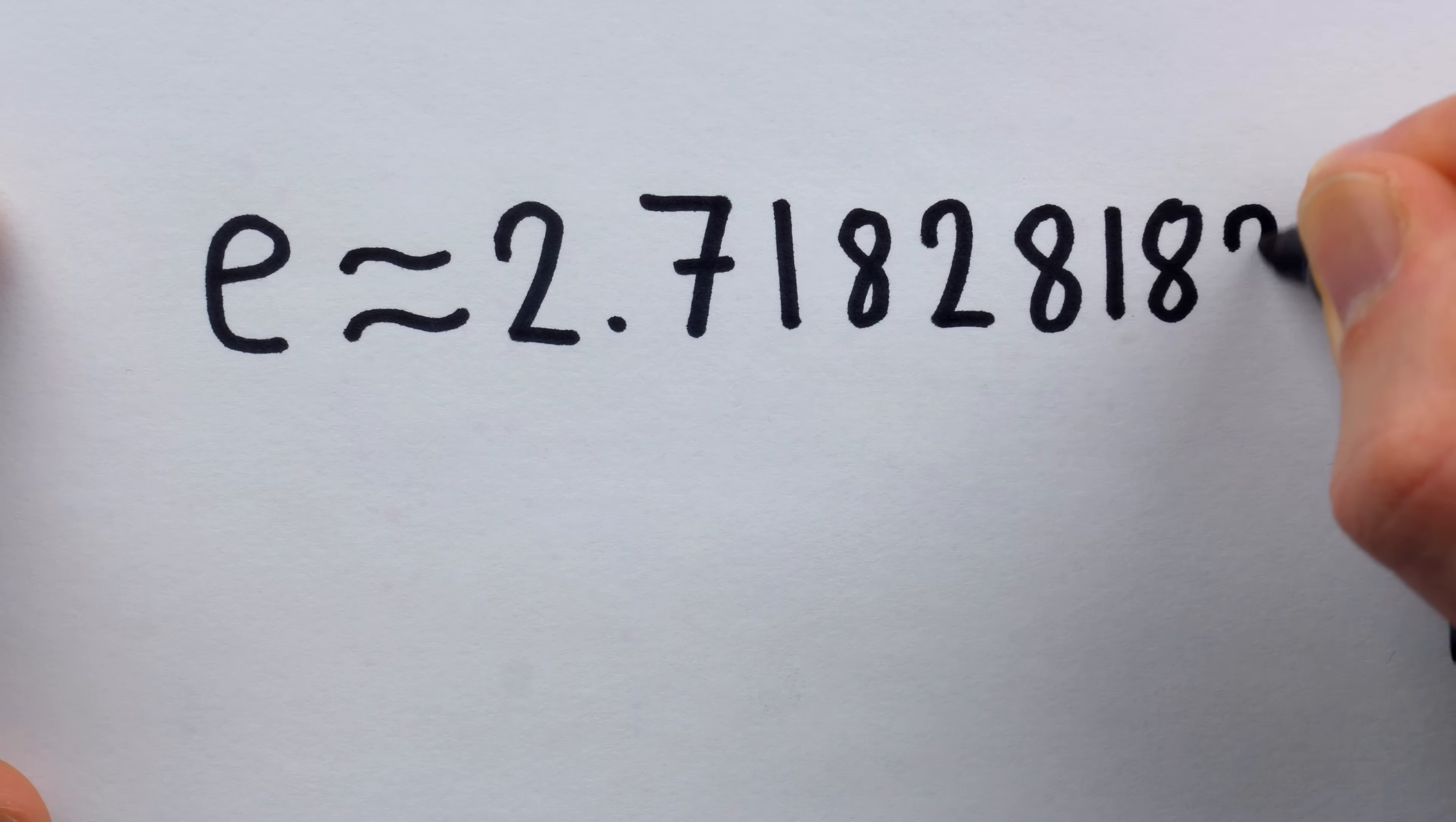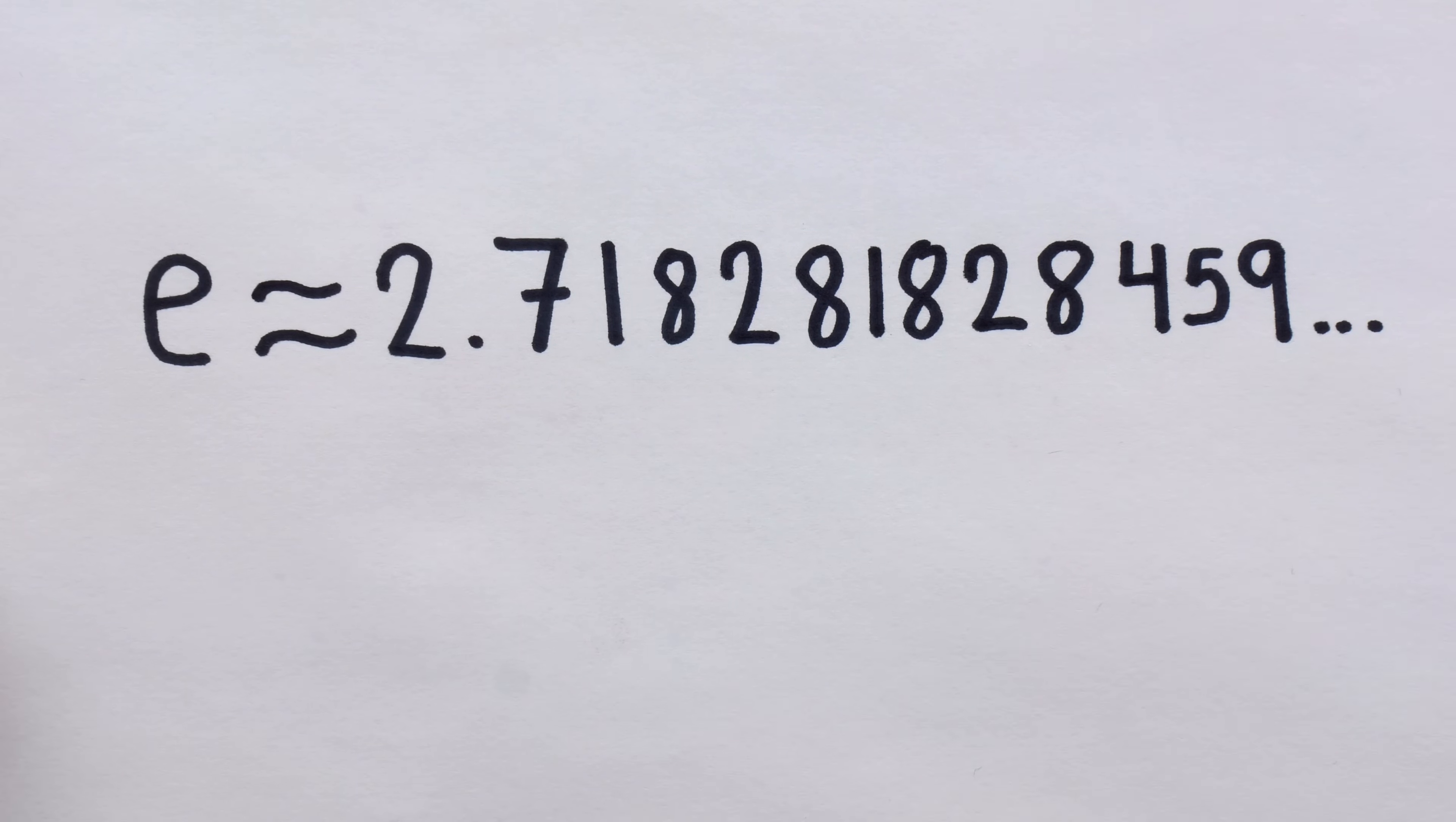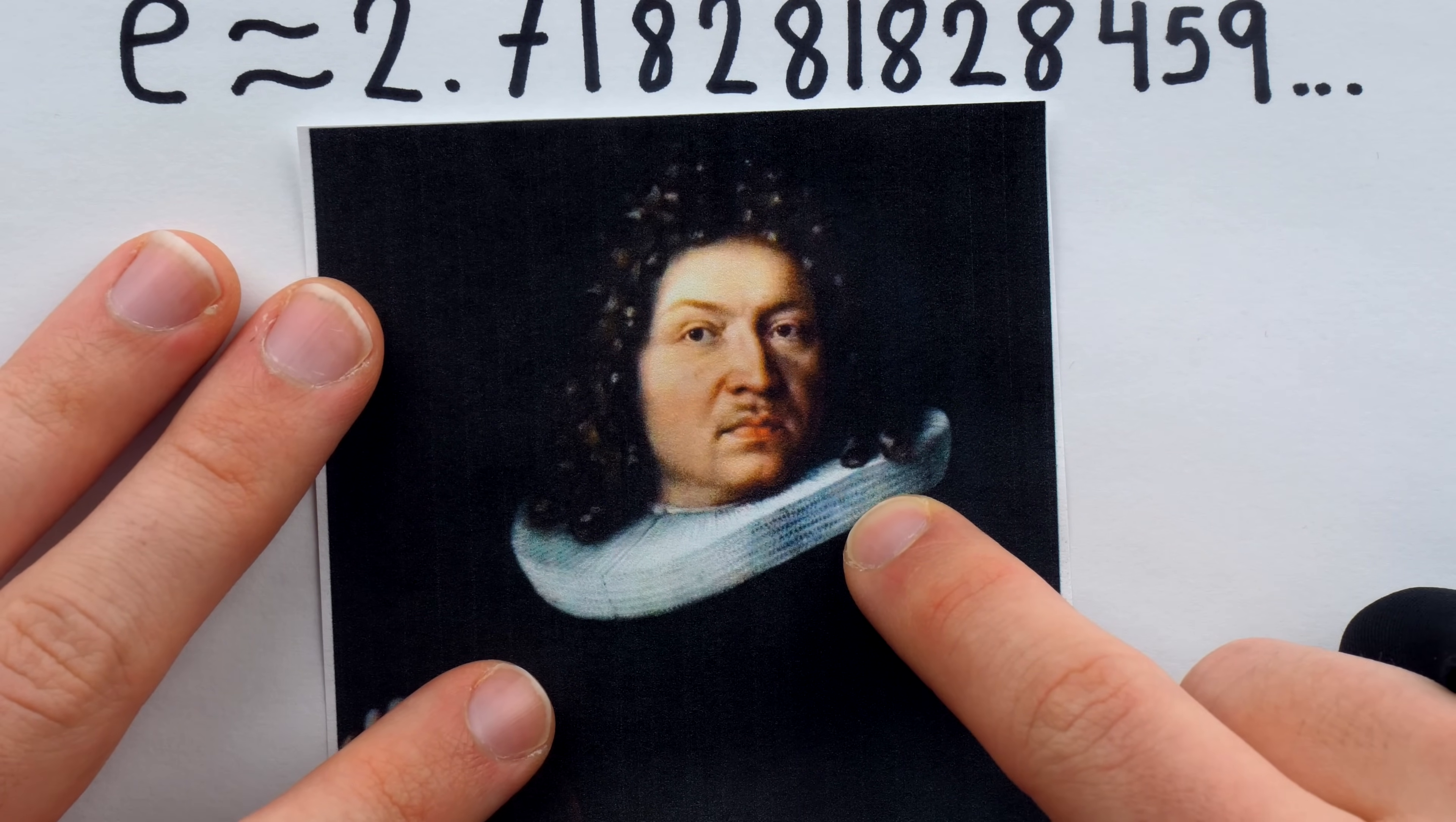Like all irrational numbers, it is characterized, among other things, by the fact that its decimal expansion goes on infinitely without ever repeating or terminating. These are the first handful of digits of e. This notation, by the way, for the number, was introduced by our boy Jacob Bernoulli in 1683.